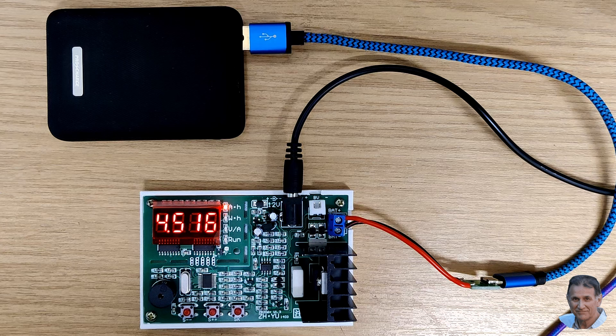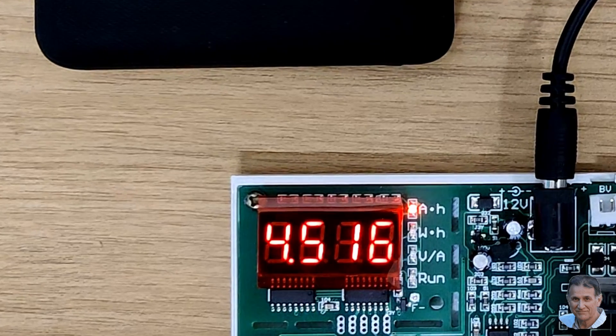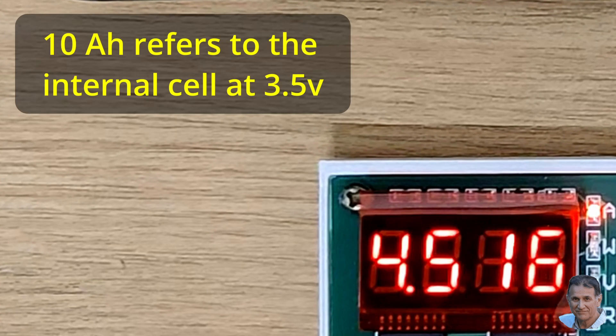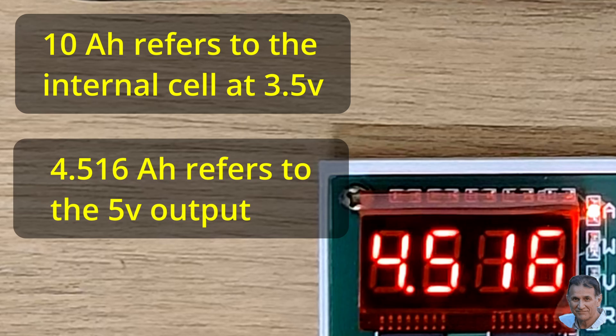The difference is because we're not comparing the milliampere hours at the same voltage. The 10 ampere hour refers to the 3.5V cell inside the power bank, whereas the 4.5 ampere hour we measured refers to the 5V output.